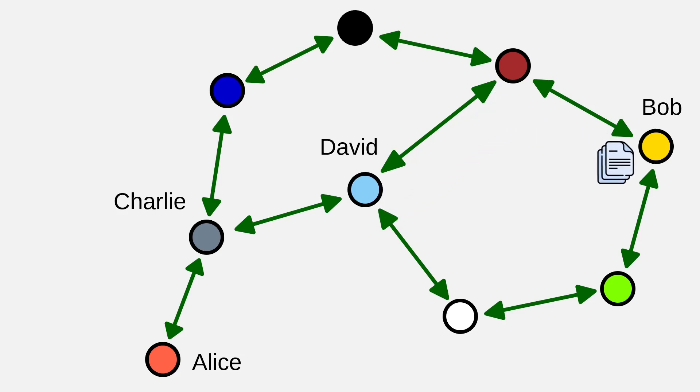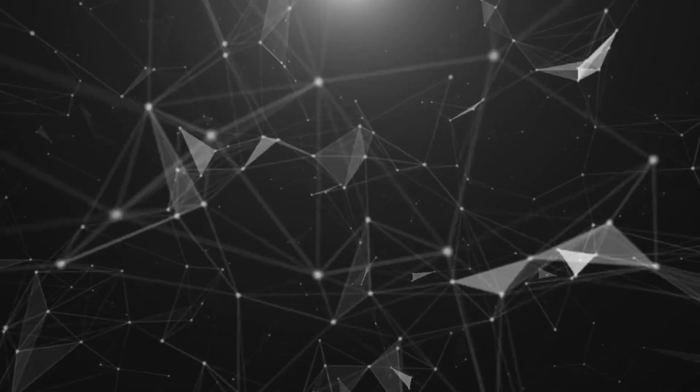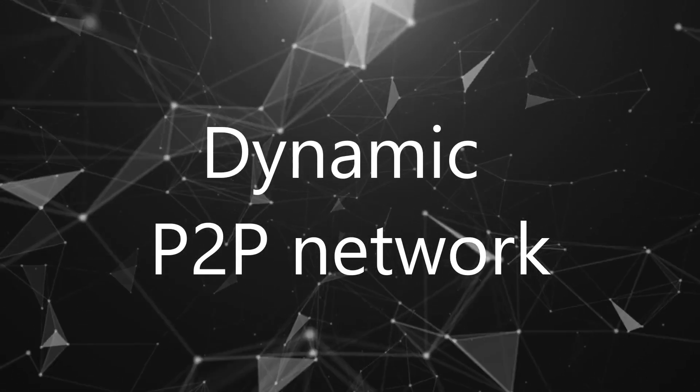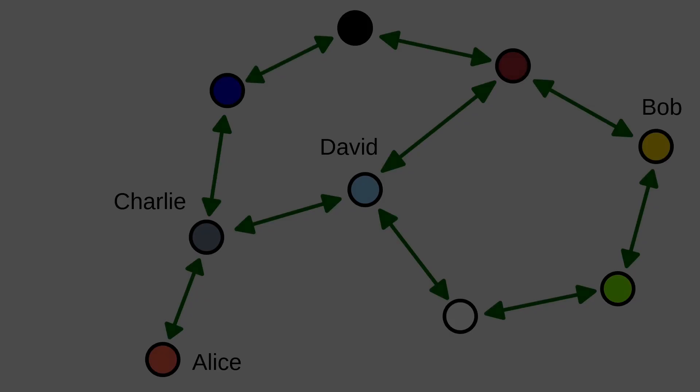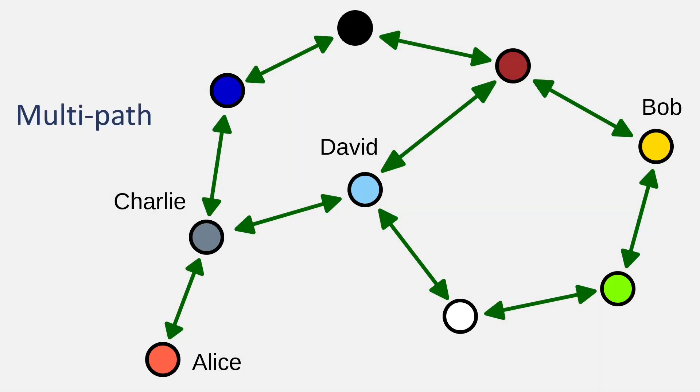While the concept is straightforward, BitChat faces several technical challenges. First and foremost, BitChat's network is constantly changing because users move around and go online and offline without informing. To handle this, BitChat employs multi-path transmission, where the same message is sent through multiple relay chains at once.